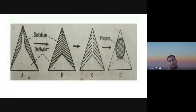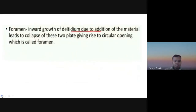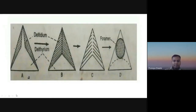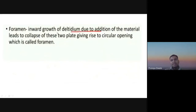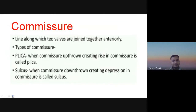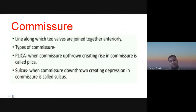The foramen is the inward growth of the delthyrium; due to the addition of material, it leads to the collapse of the two plates, giving rise to a circular opening called the foramen. The commissure is the line along which the two valves are joined together anteriorly. There are types of commissure: plica, when the commissure is thrown upward; and sulcus, when the commissure is thrown downward creating a depression.